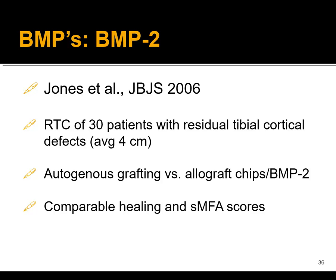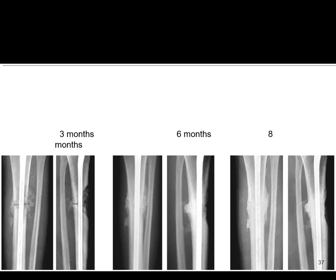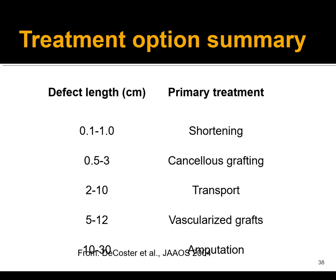A couple of papers look at using BMP2 for residual cortical defects — say you have a tibia fracture, fixed with a rod and screws, but you still have a residual cortical defect. One option is autograft. The Masquelet technique is when you put a spacer in, come back after four to six weeks until the wound has declared itself not infected, take that out, and do autogenous grafting. An alternative is to put in BMP2 and allograft. Here's an example of the tibia with a residual defect treated this way.